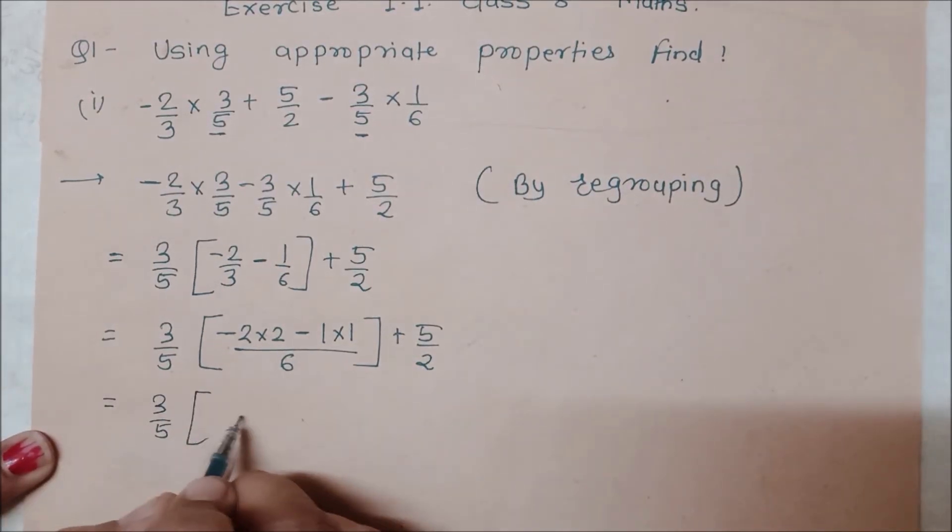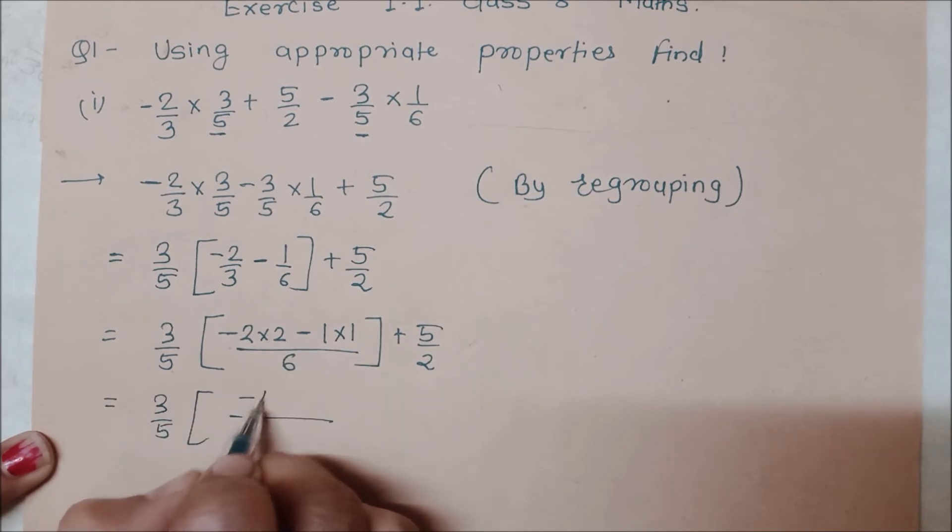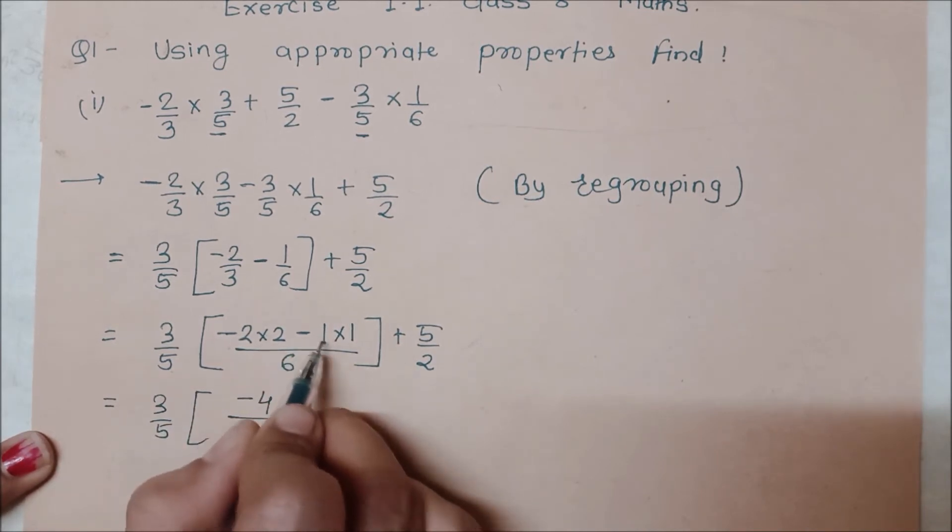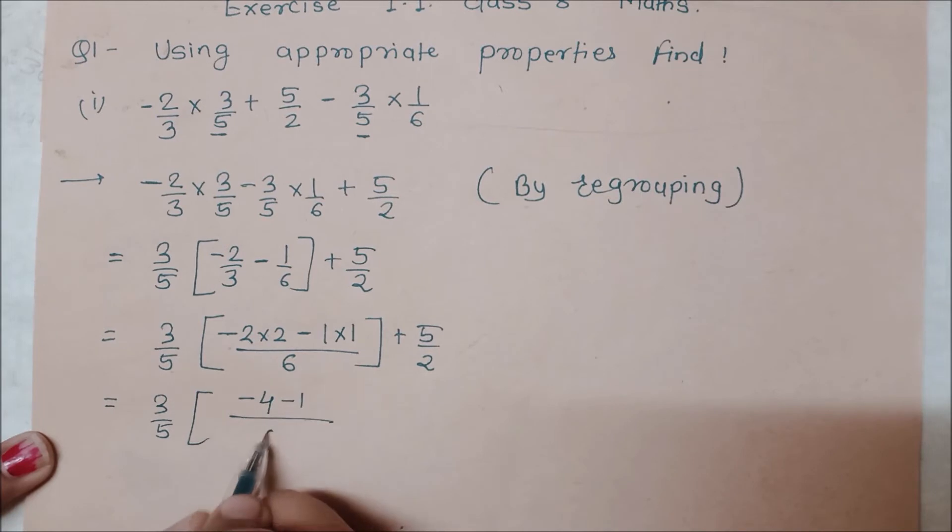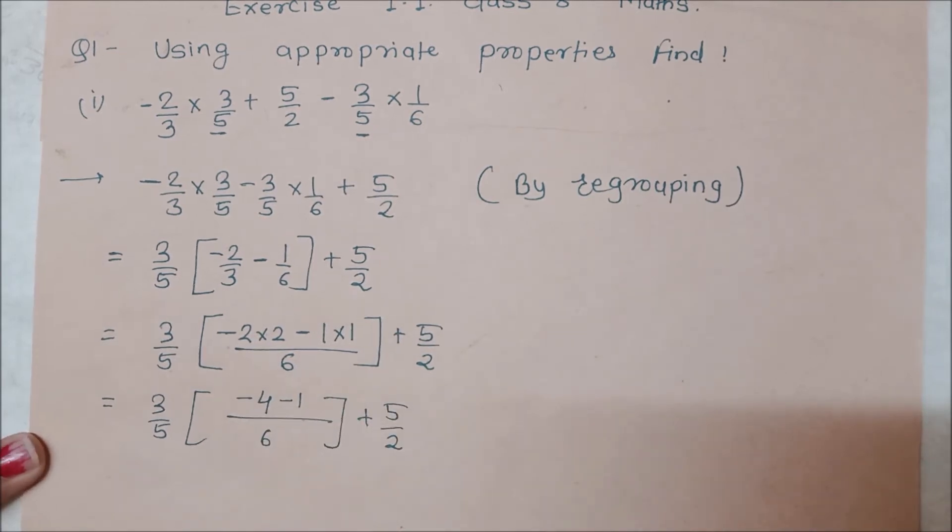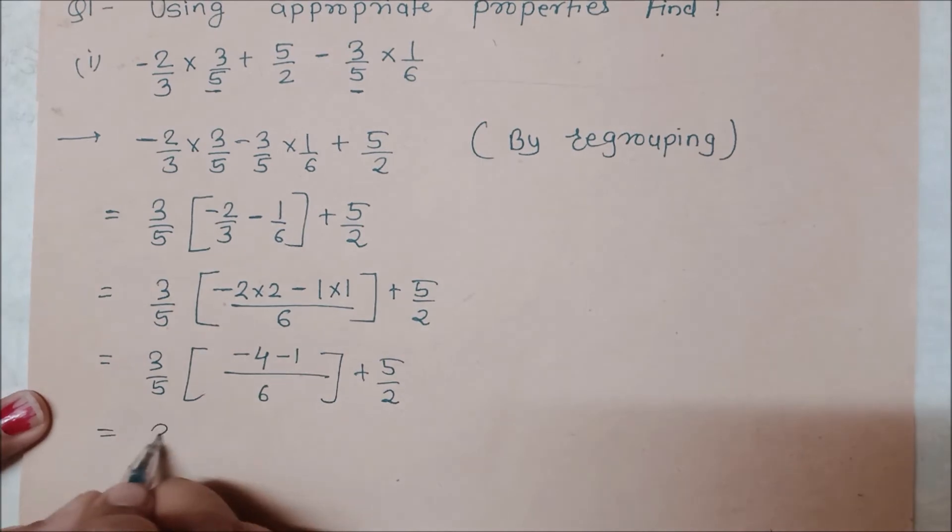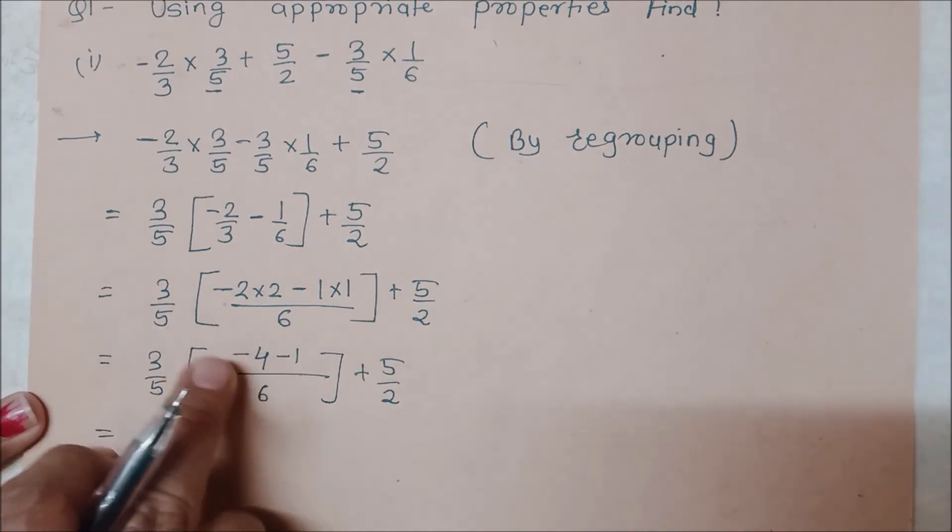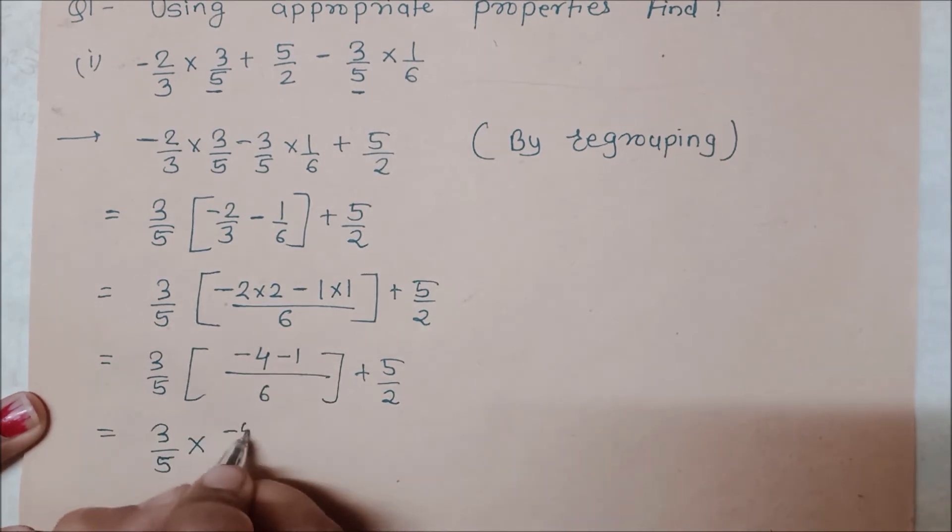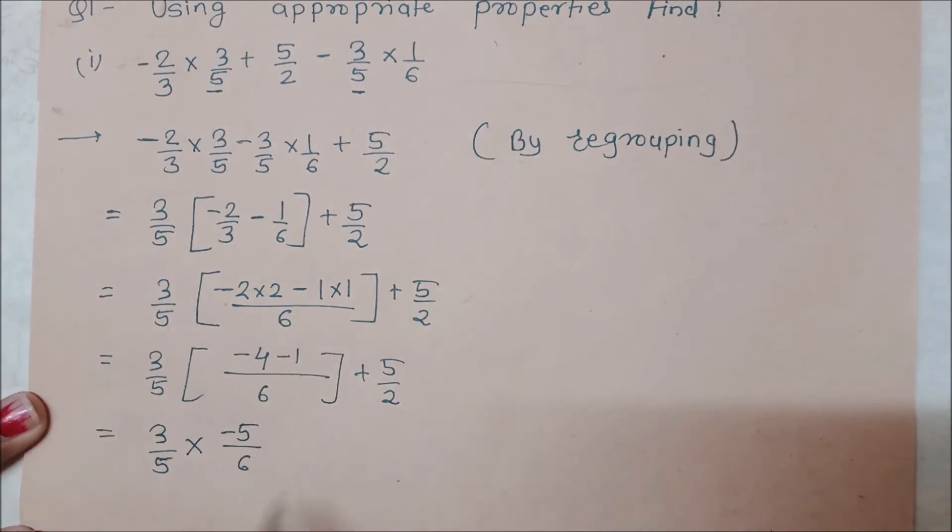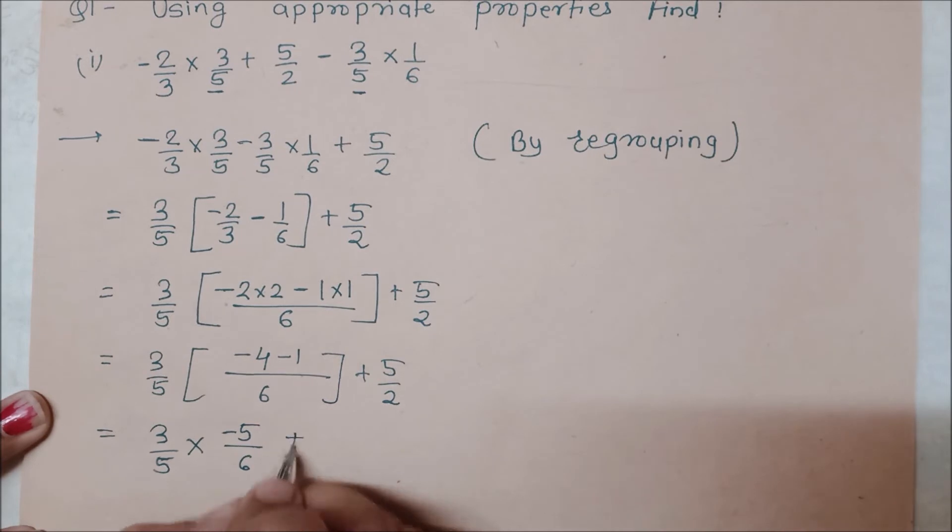What do we do here? We will write 3 by 5. First we will see: this will be 2 times 2 is 4, which means minus 4. This will be minus 1. This will be upon 6. Plus 5 by 2. We will write 3 by 5 into, we will remove the brackets. Minus 4 and minus 1 is minus 5 upon 6, plus 5 by 2.